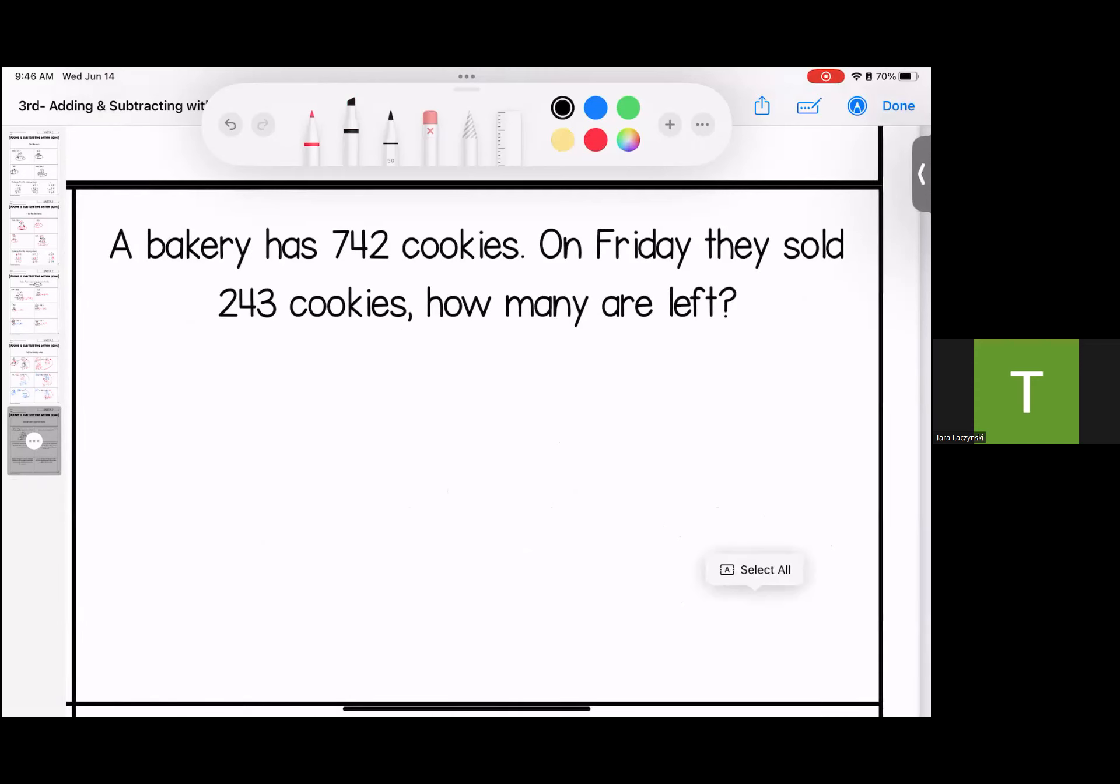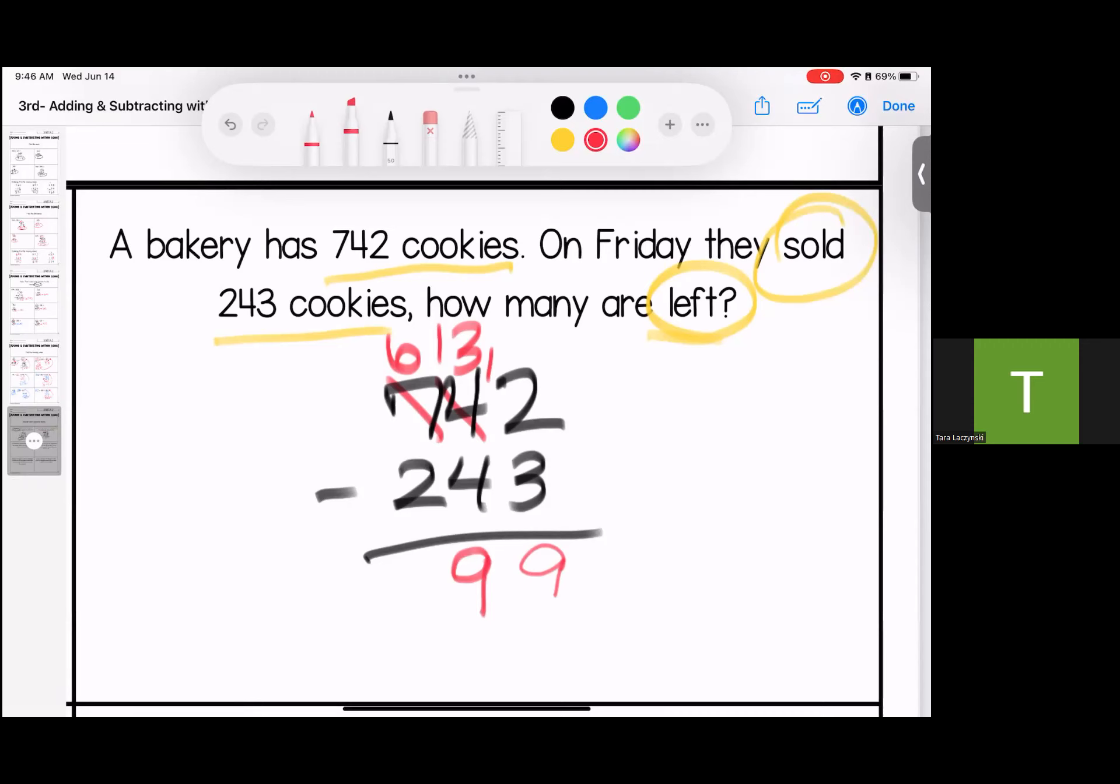Over here, what are they asking me to do? What numbers are they giving me to use? A bakery has 742 cookies, on Friday they sold 243. How many are left? That tells me I need to subtract. So I started with 742, I sold 243, we got to double borrow. But you can do hard things. 12 minus 3 is 9, 13 minus 4 is 9, 6 minus 2 is 4. We have 499 cookies left.